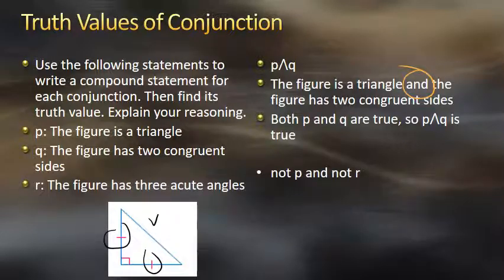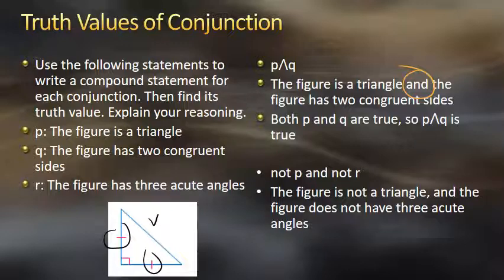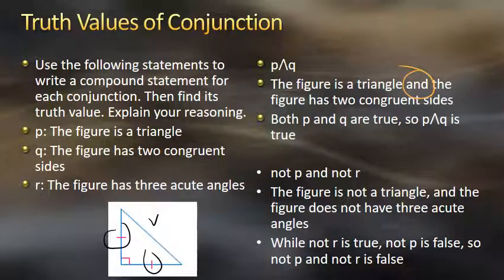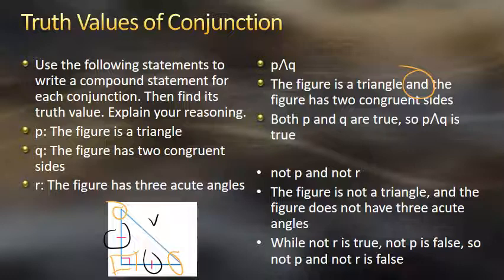The second conjunction is 'not P and not R.' P is 'the figure is a triangle,' so not P would be 'the figure is not a triangle.' R is 'the figure has three acute angles,' so not R would be 'the figure does not have three acute angles.' The compound statement reads: 'The figure is not a triangle AND the figure does not have three acute angles.' While not R is true — it only has two acute angles, and the other is a 90-degree angle — not P is false. So not P and not R is false, because both statements have to be true for a conjunction to be true.